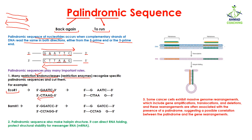So G-A-A-T-T-C reads as G-A-A-T-T-C from both strands. What EcoRI does is recognize this sequence and then cut it — from this point here and from here. So you can see that it has excised at both positions. This is how restriction endonucleases recognize and cut the double-stranded DNA from both positions.